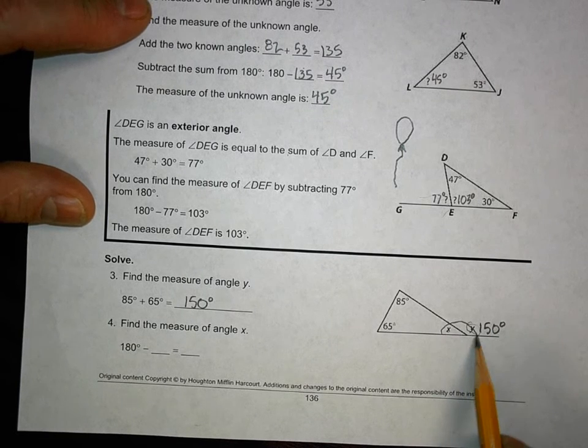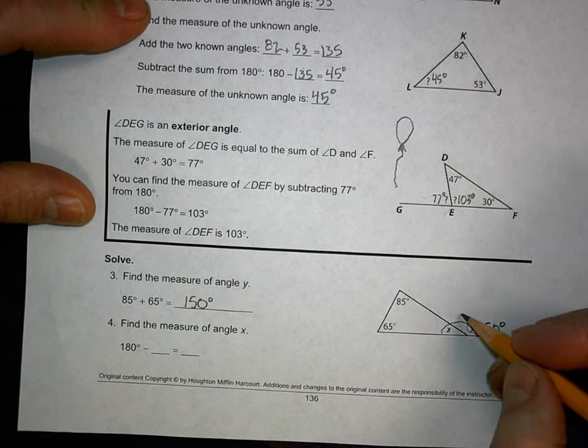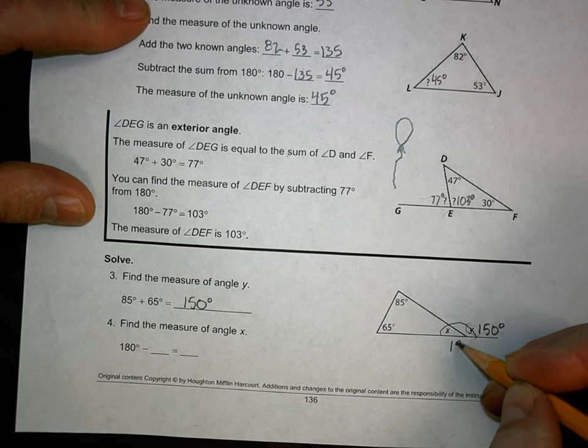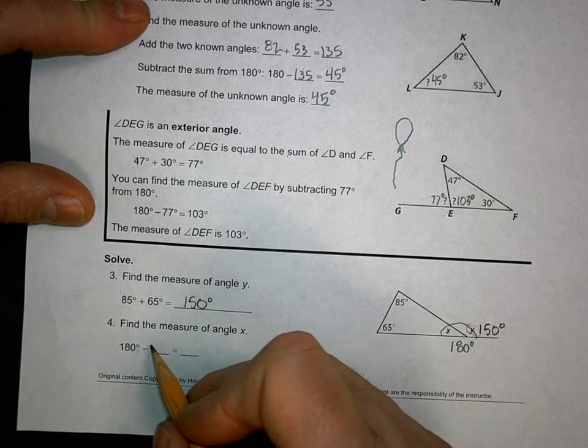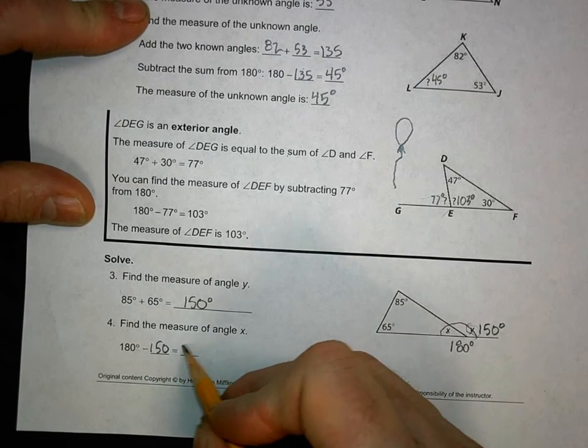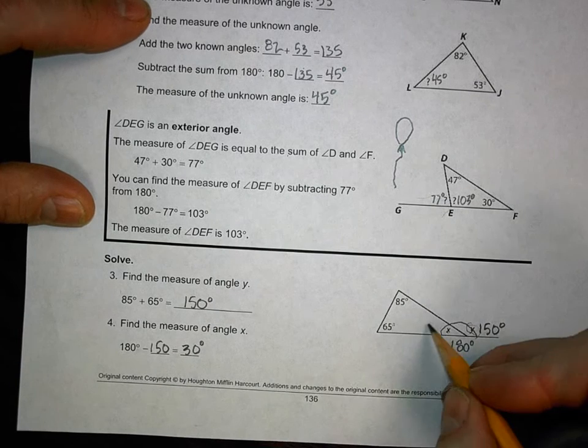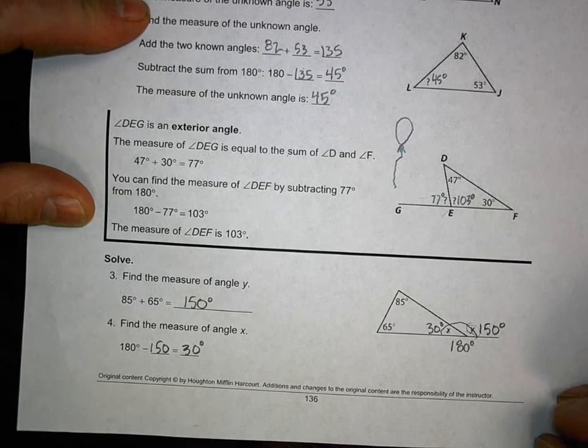So find the measure of angle X, which is that interior angle there. And together, these are a half of basketball, which is 180 degrees. Total is 180 degrees. So all I got to do is subtract 150 from 180. And I get 30 degrees. And again, I like labeling my stuff. I get 30 degrees.